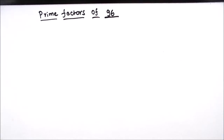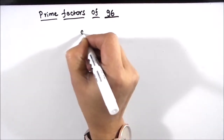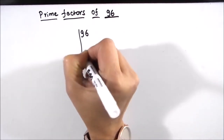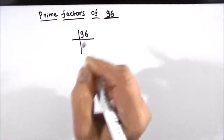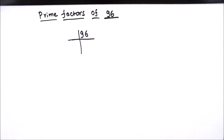Hello everyone. In this video we are going to find the prime factors of number 96 using the prime factorization method. In this method we divide the number by prime numbers and express it as a product of its prime factors.